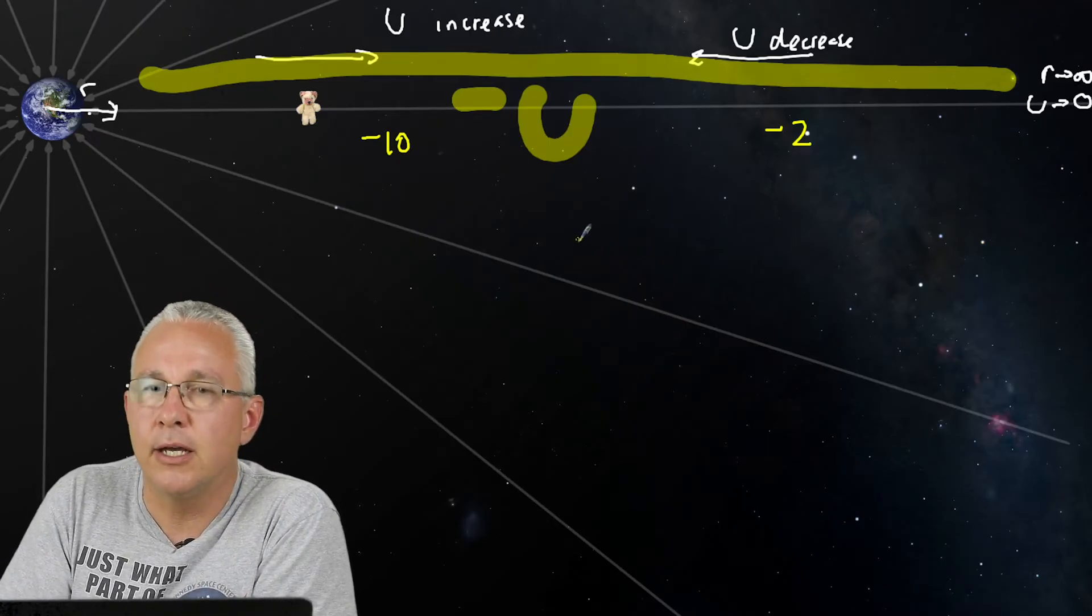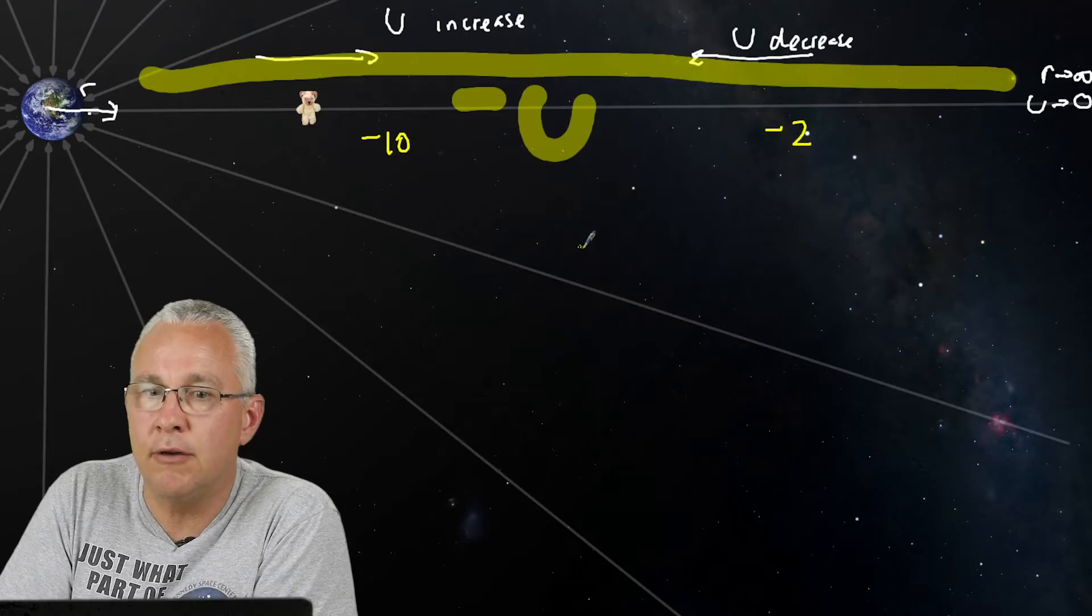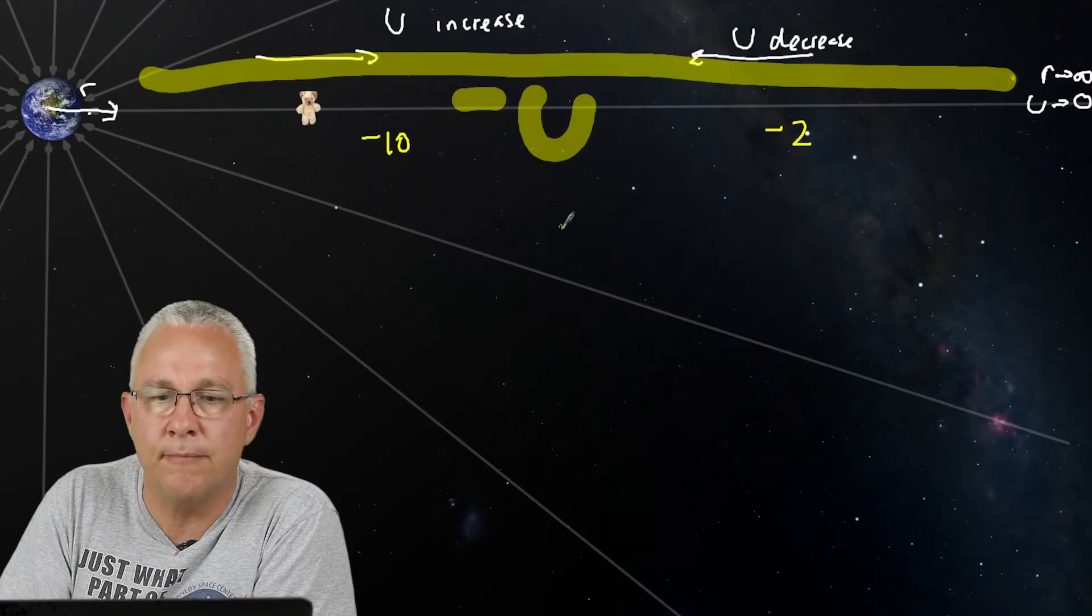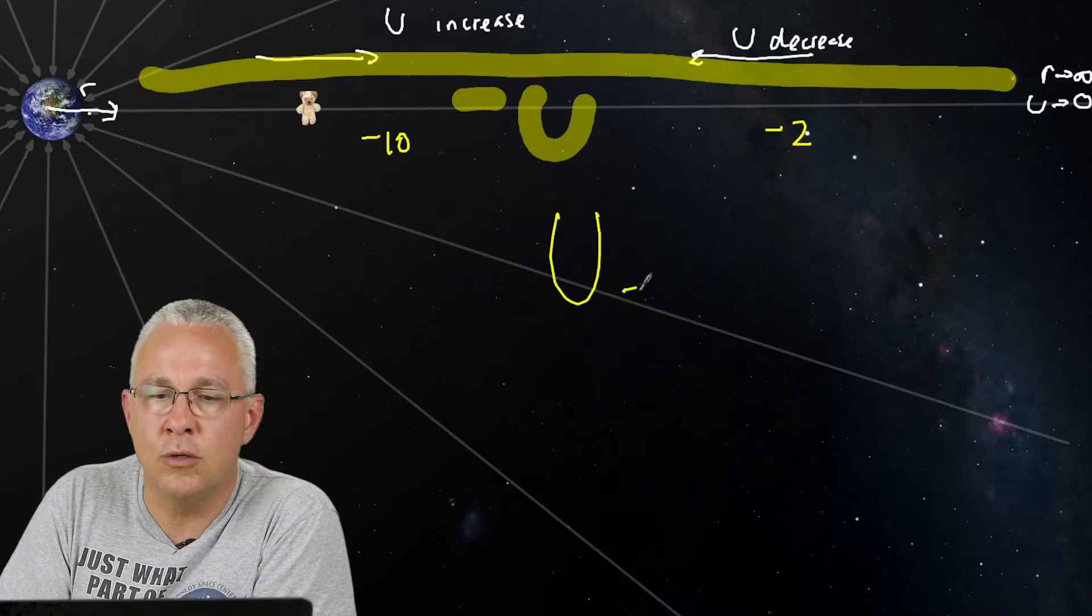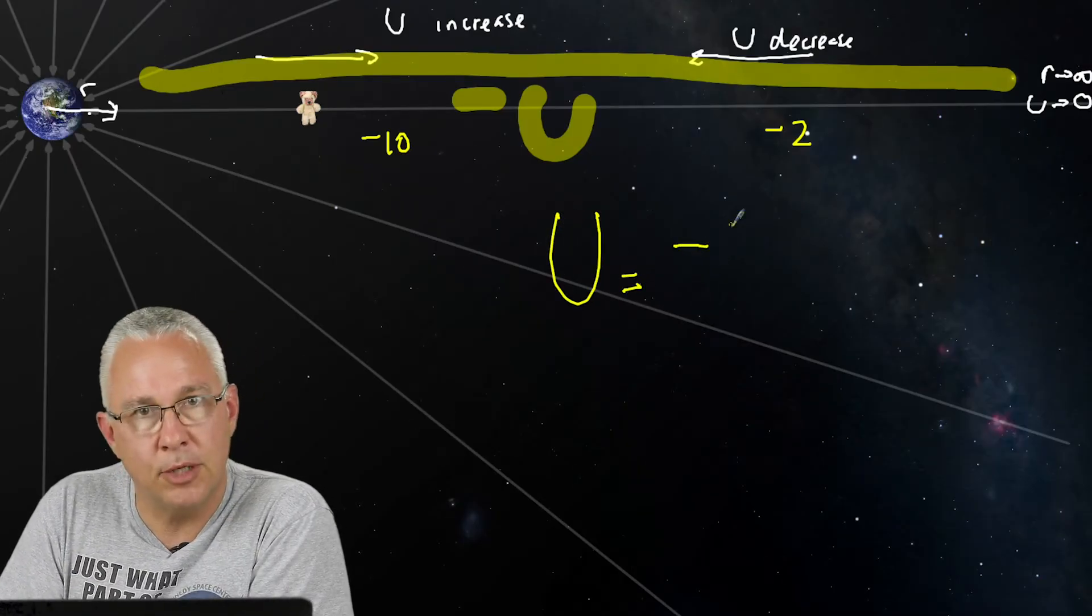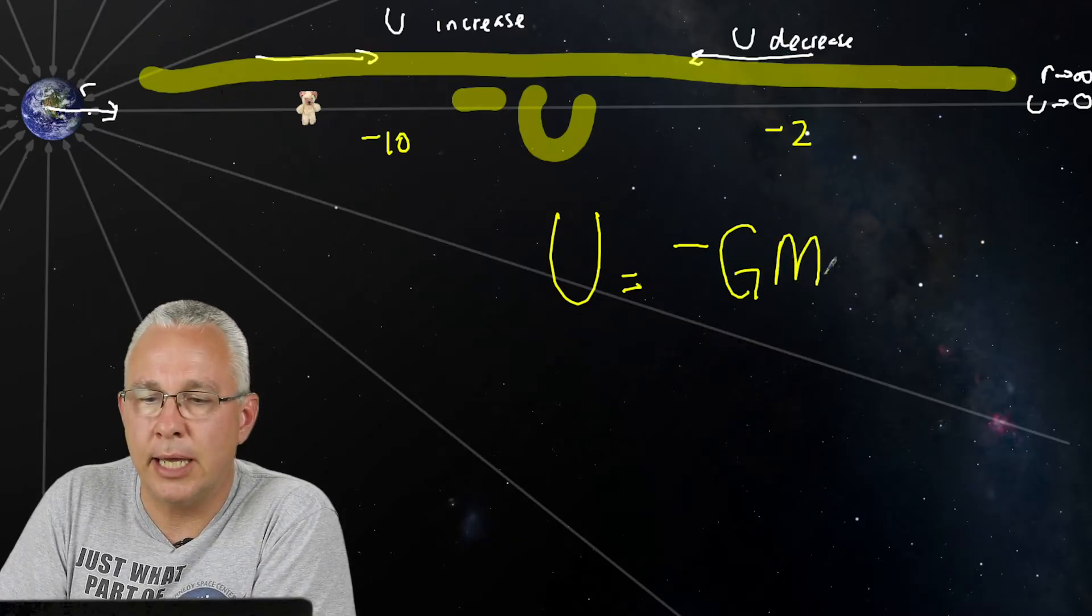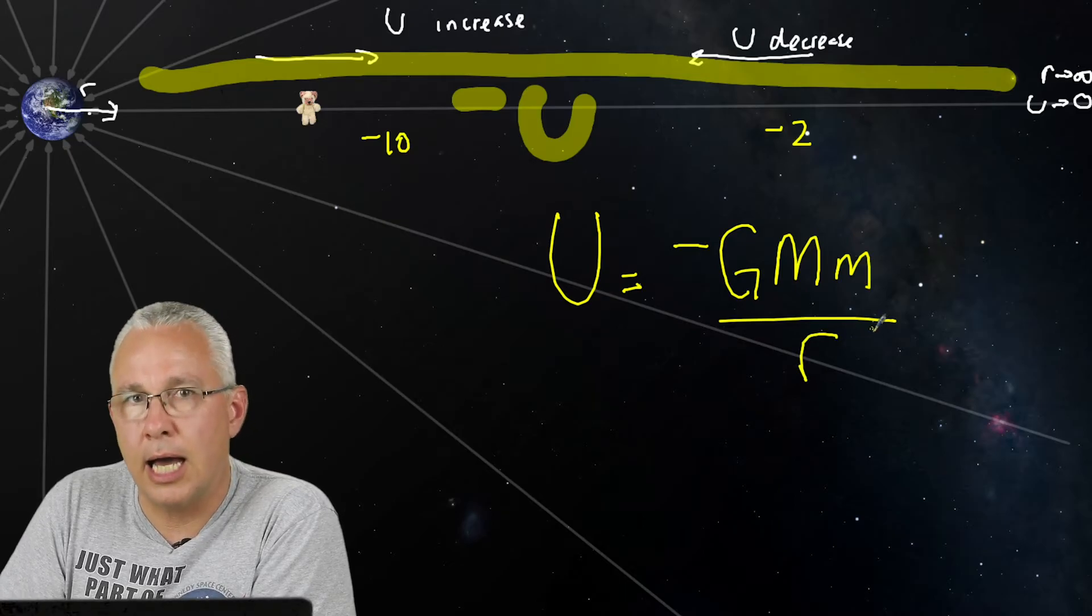And therefore, mathematically, my gravitational energy formula, which is really about the change of gravitational energy starting from zero, becomes this. U is equal to negative, because our final will always be negative, G, capital M, little m, over r.